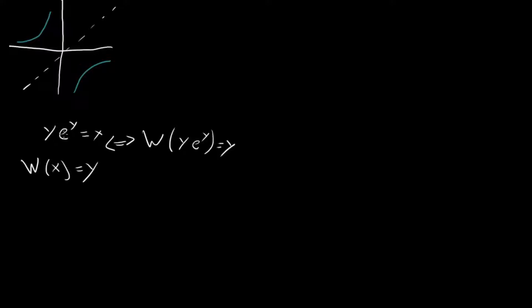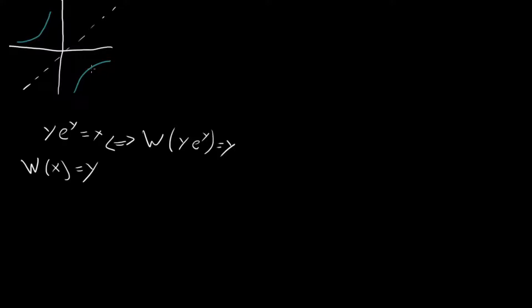And so what does that mean? That means if we plot y e to the y up here, and then we reflect it across the line y equals x, then we get our Lambert W function. And so I've already done that here. Let's take a minute to break down what we're looking at here. So first, this blue curve right here is x e to the x.